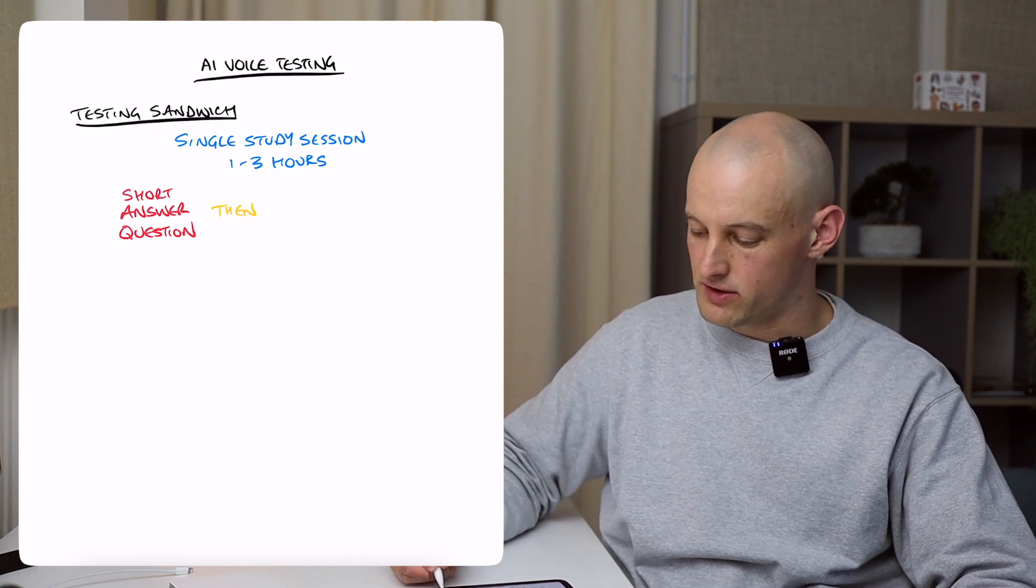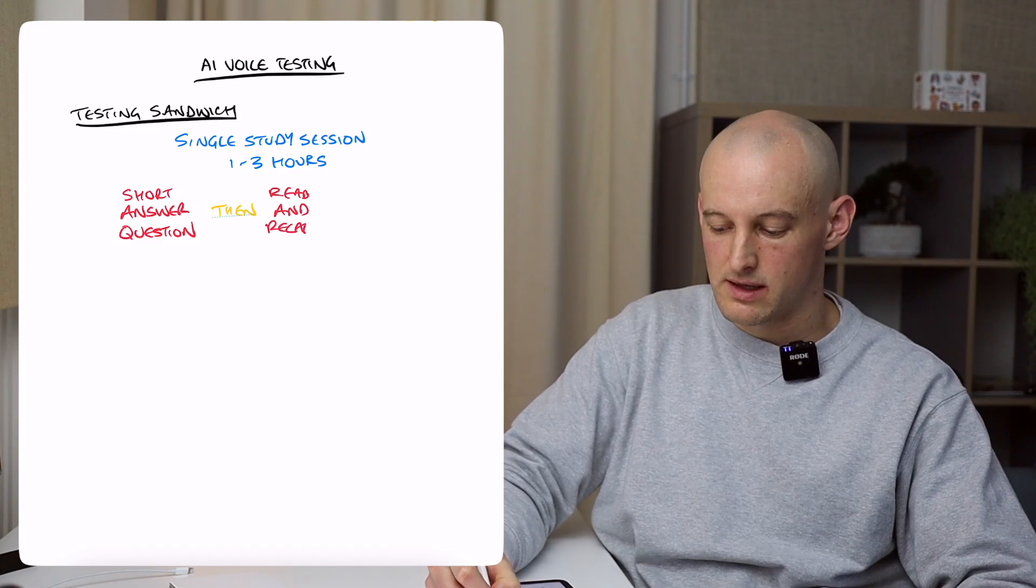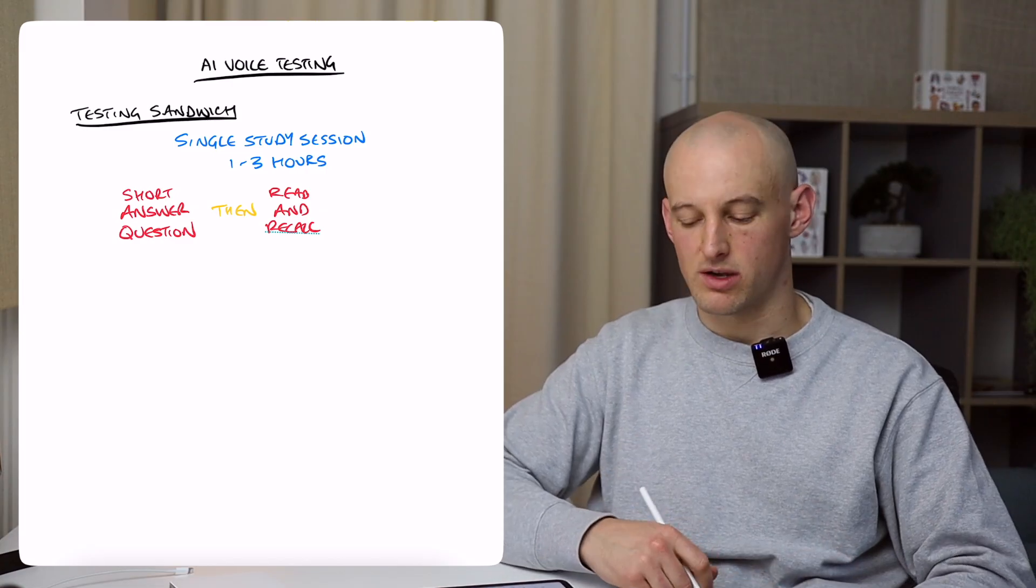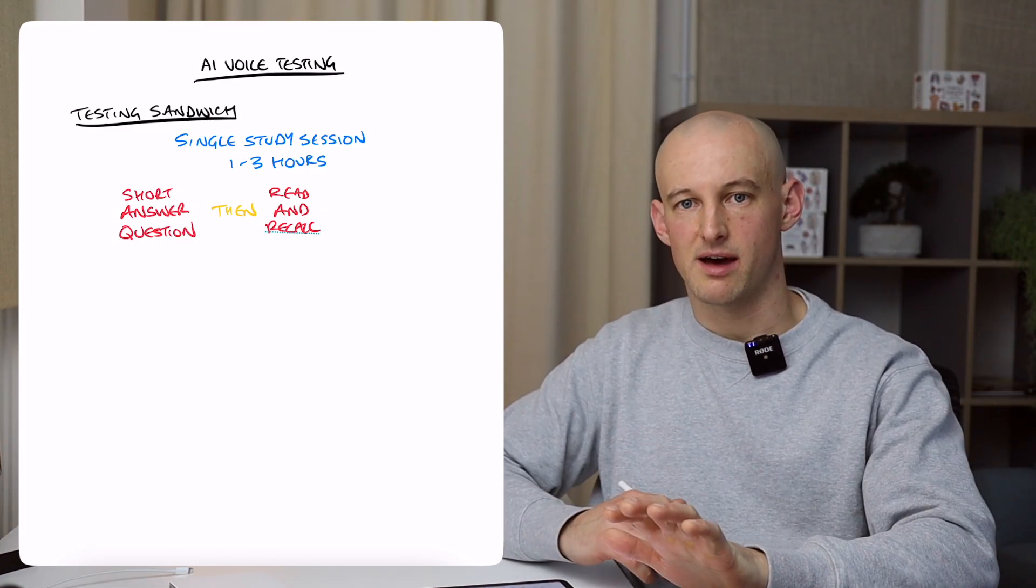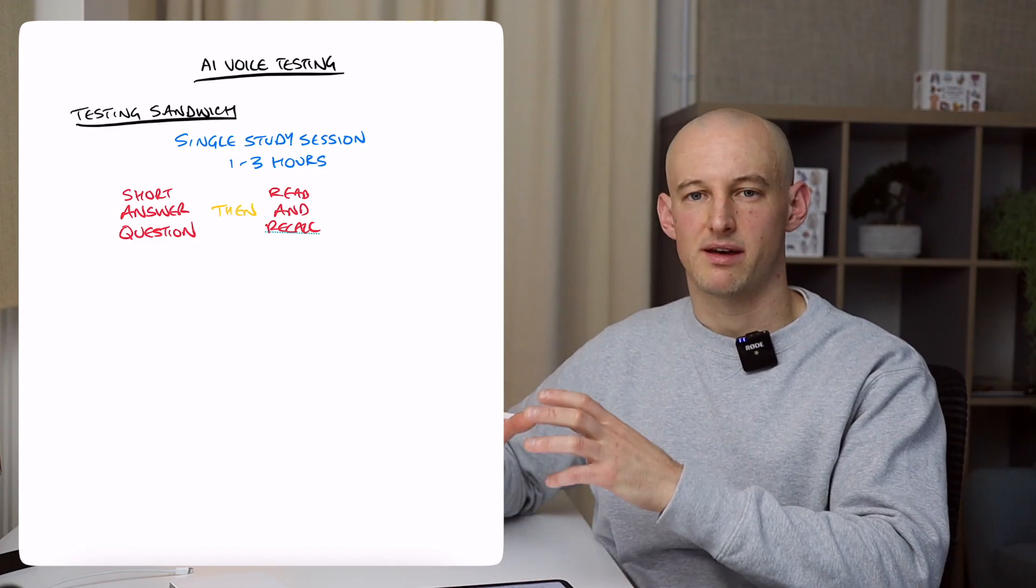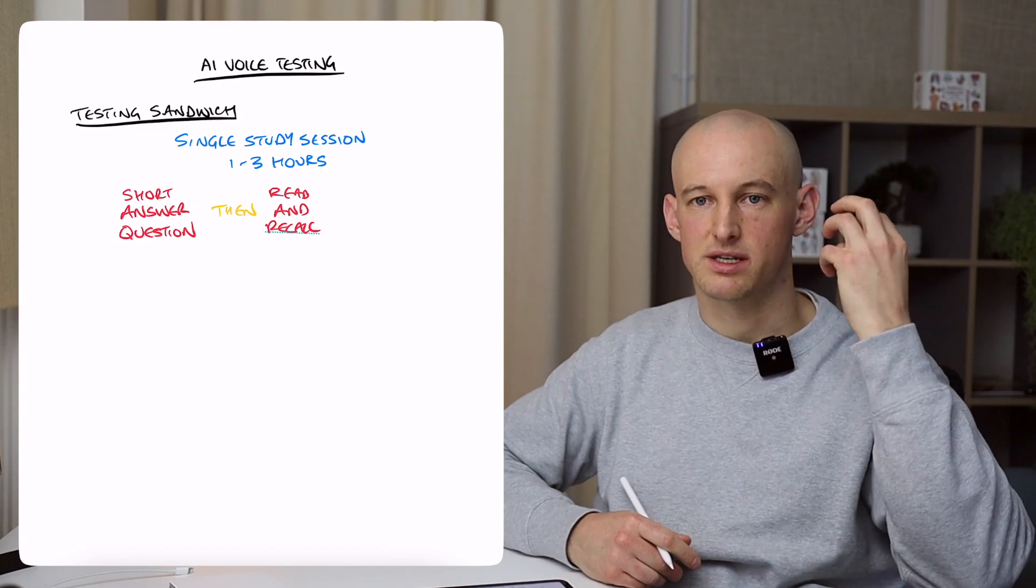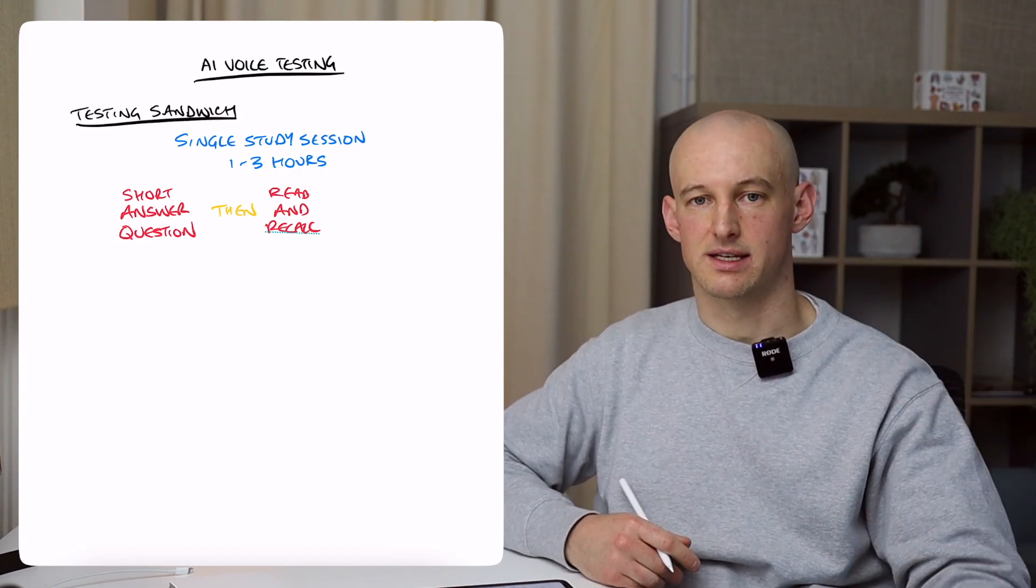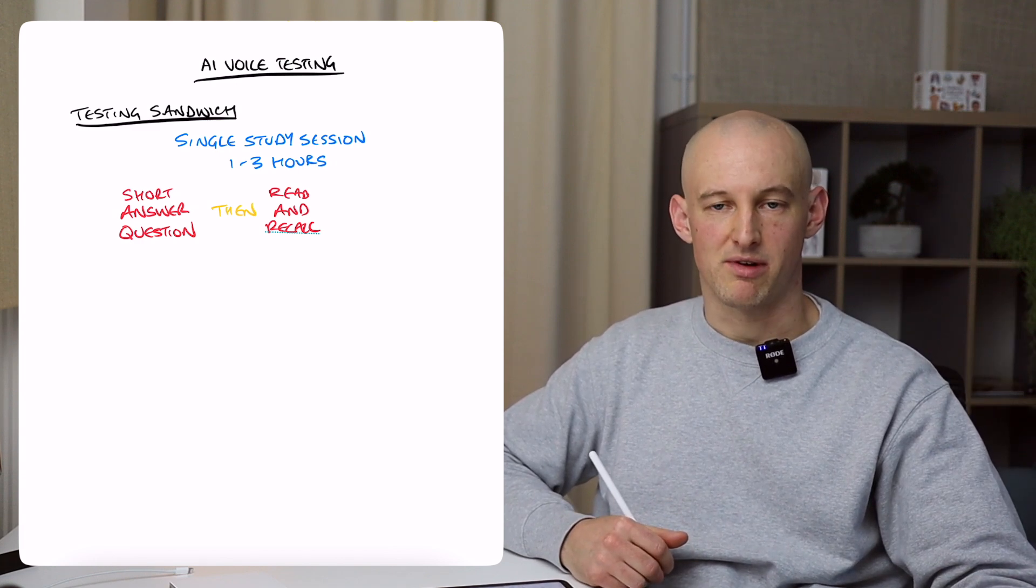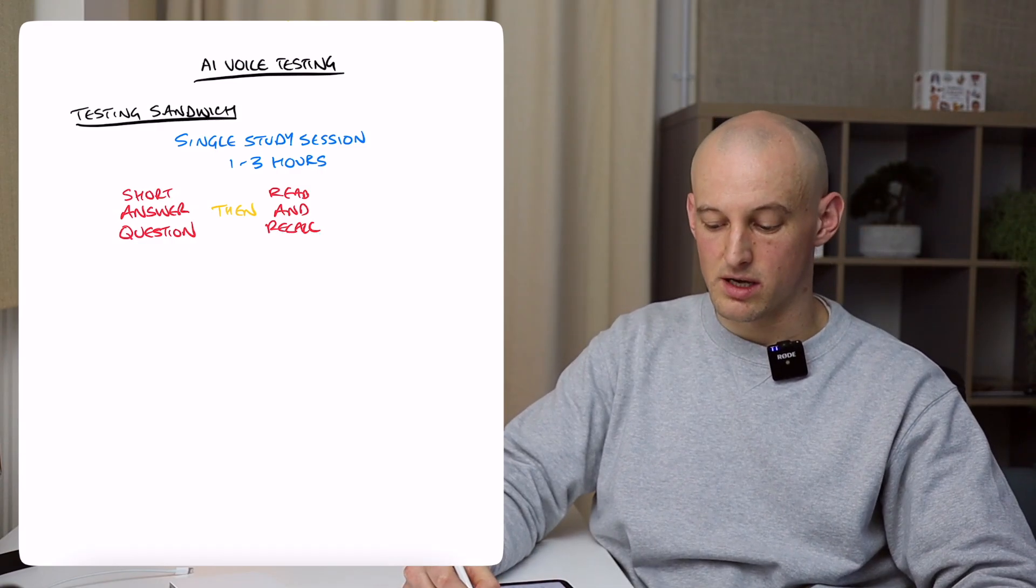Then you move on to something called read and recall. So this is a way of actively reading and absorbing the information. You're reading, but constantly covering up the information, going to a blank piece of paper and putting down everything you can remember, free recalling that information from memory. We know that recalling is when you actually write information to your memory as opposed to when you're passively absorbing it.